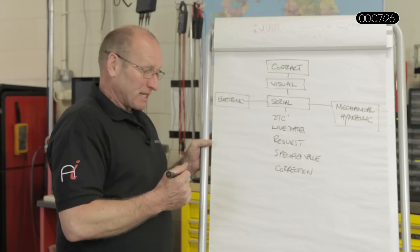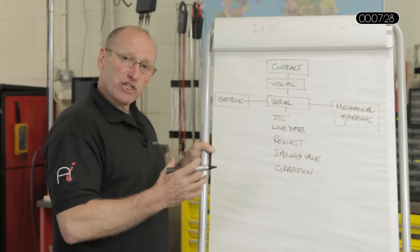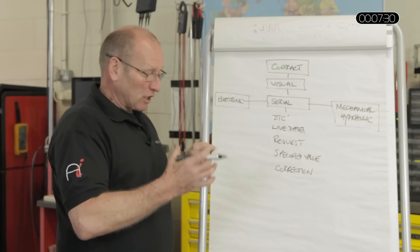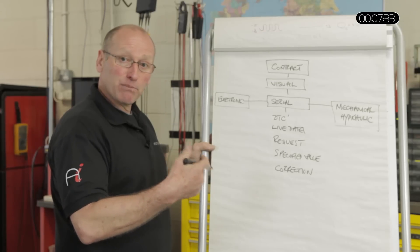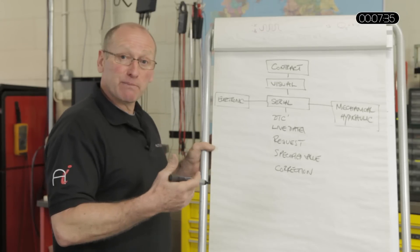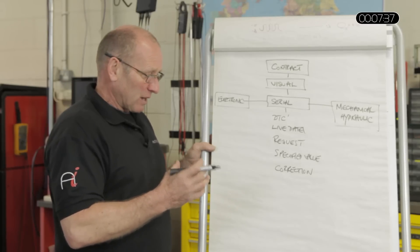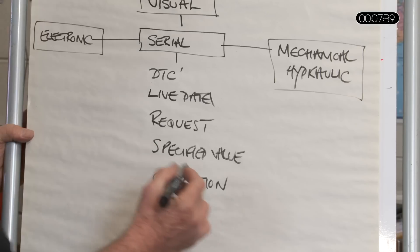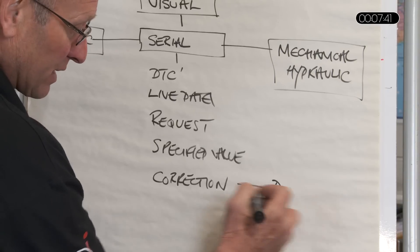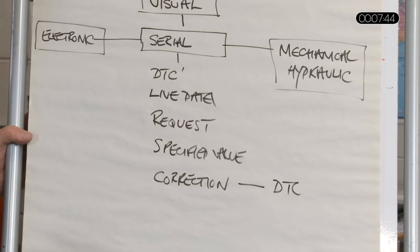When the correction process fails to address the situation, it will then come to a default, in other words, the value of a component sensor or input or even response. That will then set a DTC. So from correction, when correction becomes sufficient, a DTC will be set.